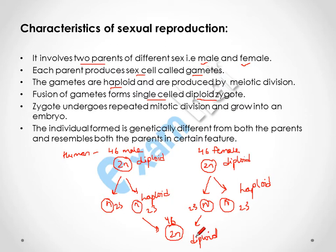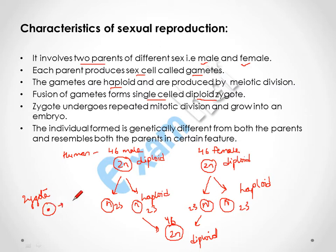The zygote has 46 chromosomes again and becomes a diploid cell — this is a single-cell zygote. Then repeated mitotic division takes place: it first divides into two cells, then four cells, and likewise forms a group of cells called an embryo.